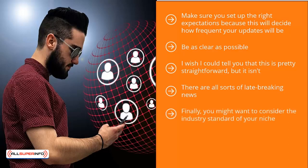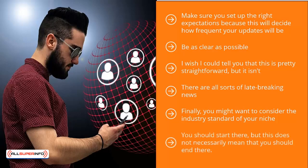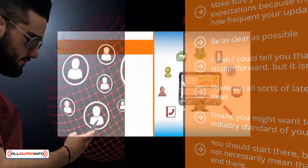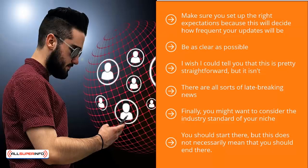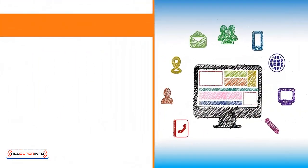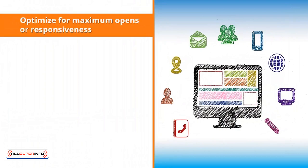Finally, you might want to consider the industry standard of your niche. If you sign up for your competitors' list and notice they tend to have the same schedule for their updates, you might want to start with that schedule. You should start there, but this does not necessarily mean you should end there. Use their schedule as a starting base, then tweak your email schedules based on the actual behavior of your list members.